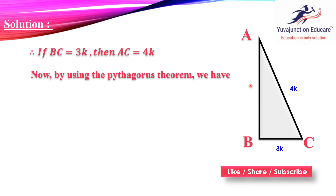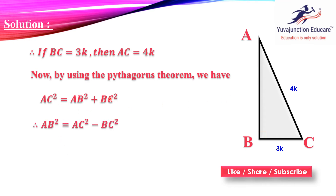Two sides are given and we have to find the third side. We are going to use Pythagoras theorem, which states that hypotenuse squared equals one side squared plus the other side squared. The hypotenuse is the side opposite the 90° angle, which is AC. So AC² = AB² + BC², and we rearrange to find AB² = AC² − BC².